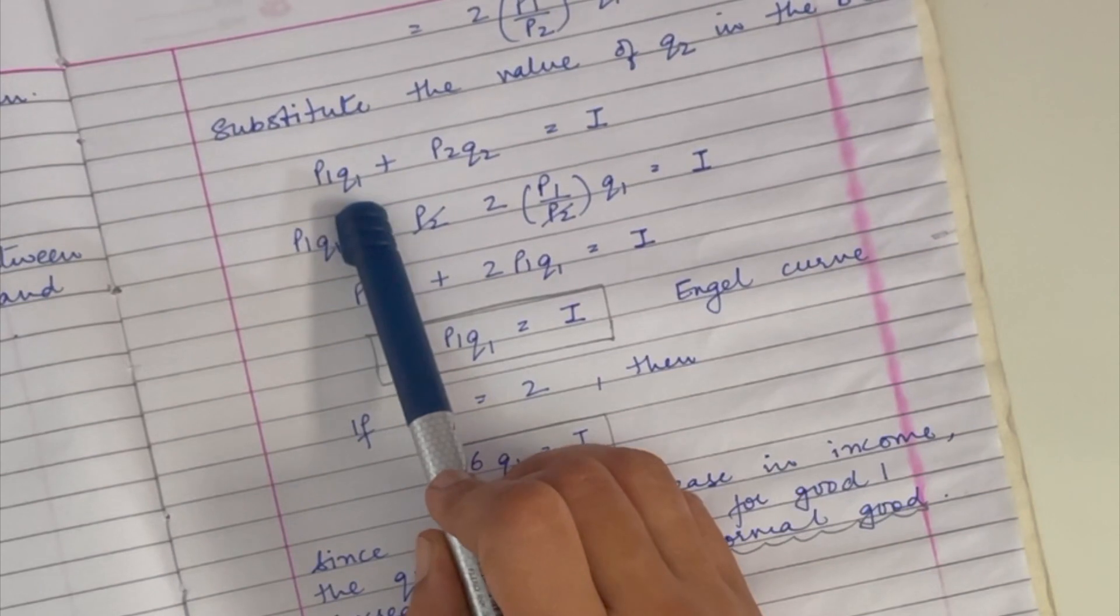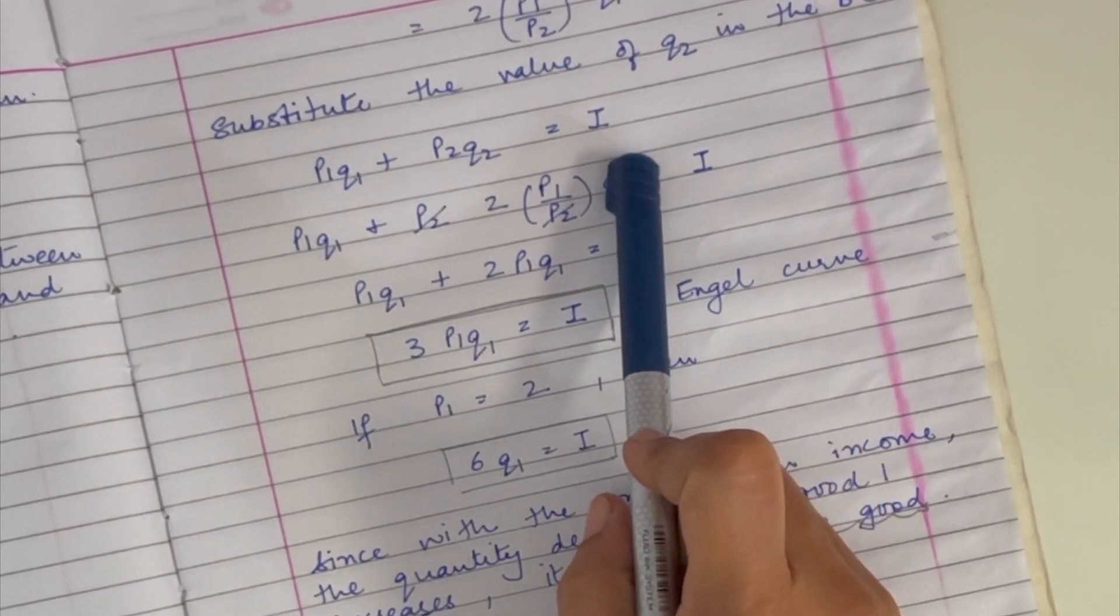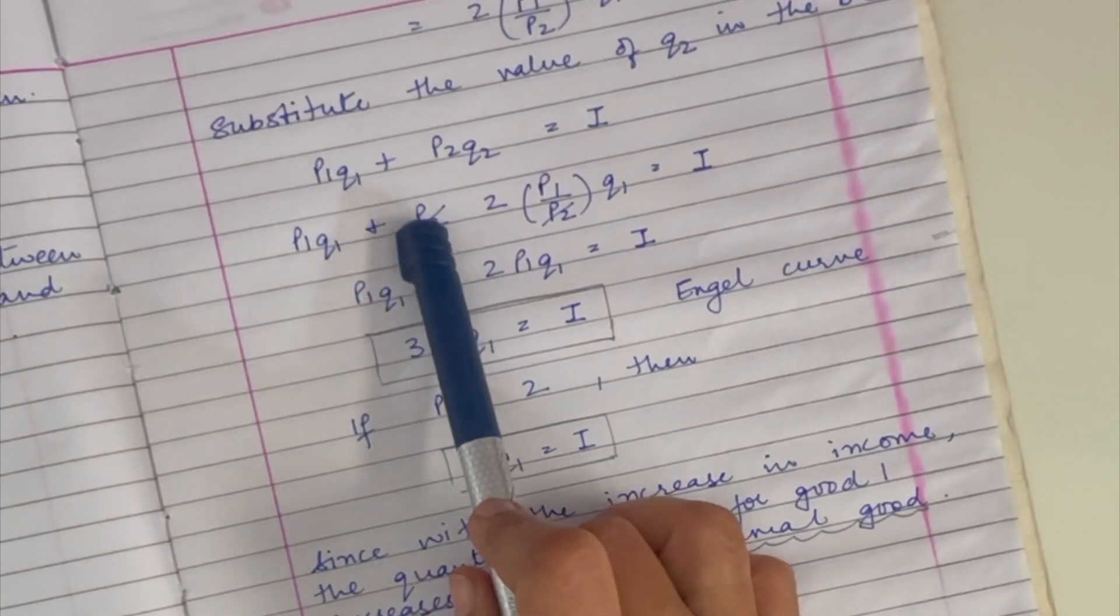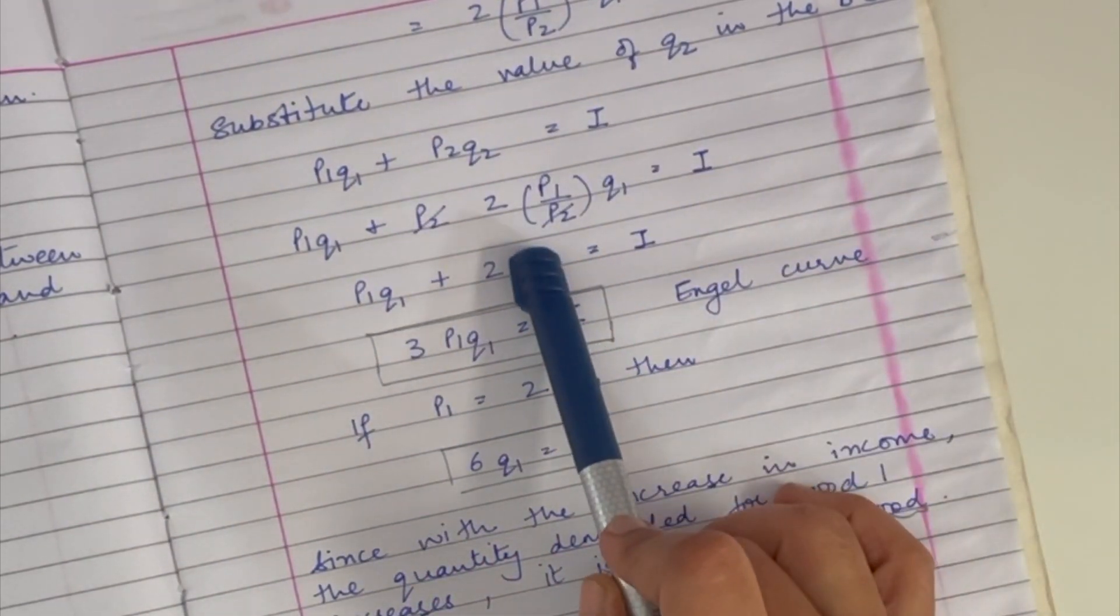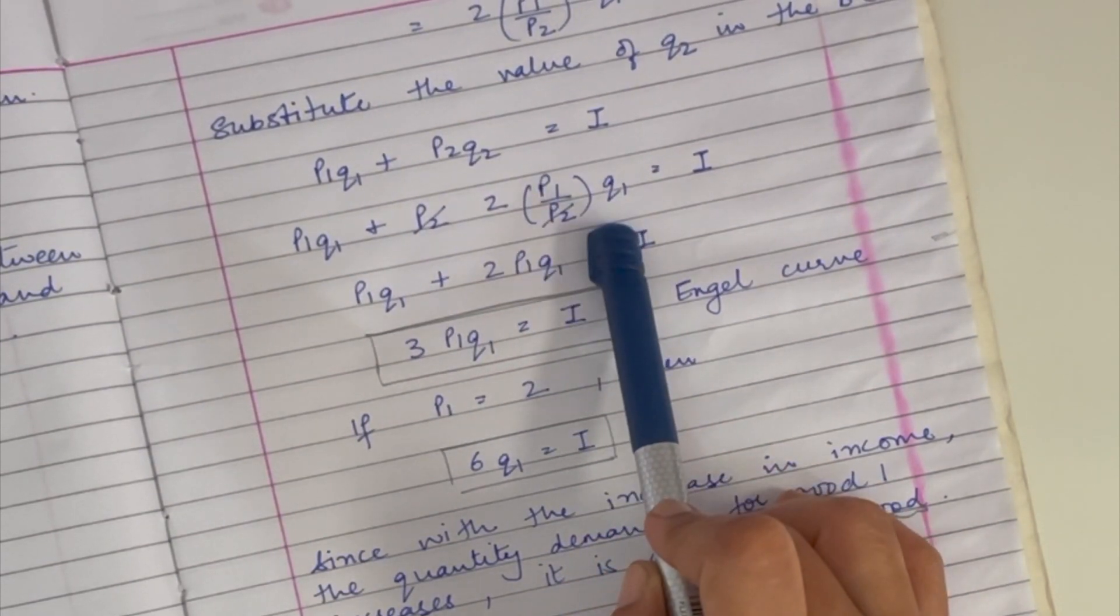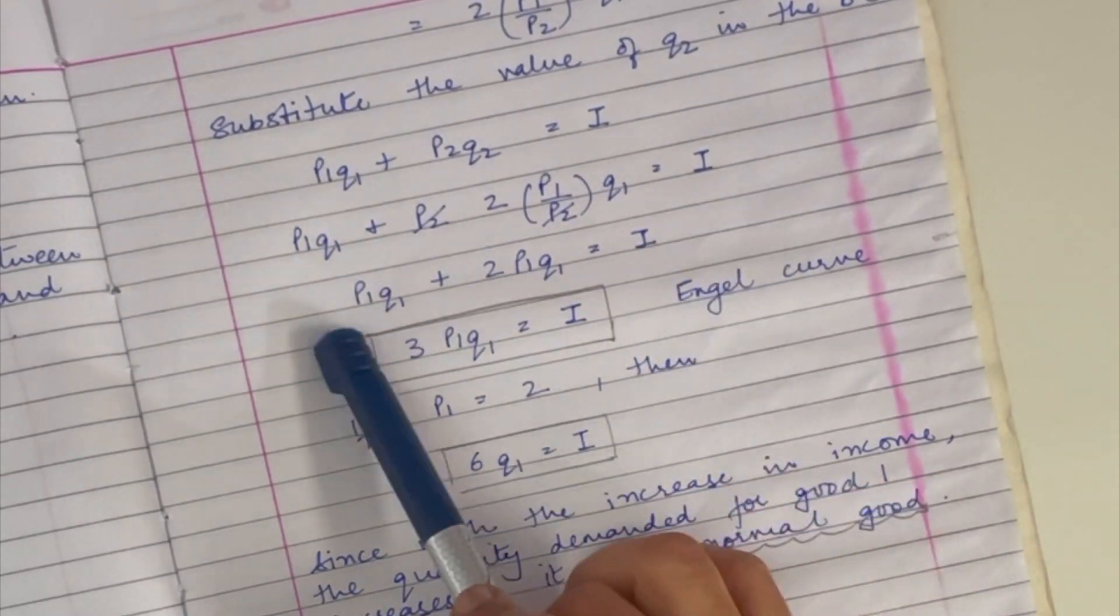P1 q1 plus p2 q2 equals I, that's your budget constraint. P1 q1 plus p2, and substituting this entire value of q2 here, I get 2 p1 p2 into q1. P2 gets cancelled, equals I.